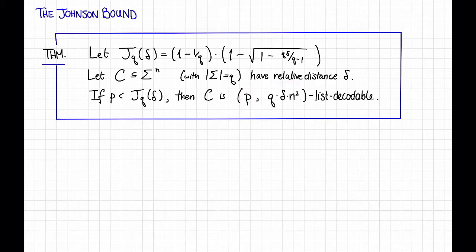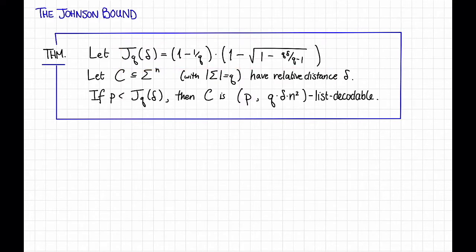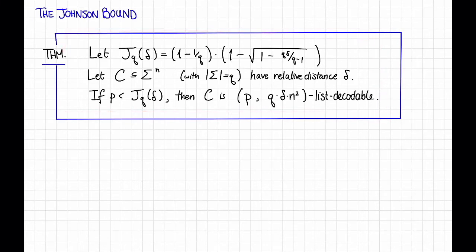Qualitatively, what the Johnson bound is saying is that if a code has good distance, then it has good list decodability. Indeed, we notice that this quantity, called the Johnson radius, is increasing in delta. So qualitatively, as delta gets bigger, then this radius p for which we have a decent guarantee on the list size is also getting bigger.